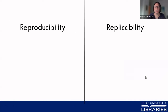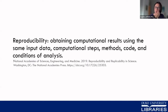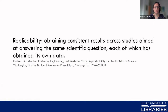We always like to start with definitions so we have a shared understanding to build our conversation on. The terms reproducibility and replicability can be used in slightly different ways by different disciplinary groups. These definitions come from the National Academies of Sciences, Engineering, and Medicine, who put out a report on this topic. Reproducibility is obtaining the same computational results using the same input data, computational steps, methods, code, and conditions of analysis. Replicability is obtaining consistent results across studies aimed at answering the same scientific question, each of which has obtained its own data.